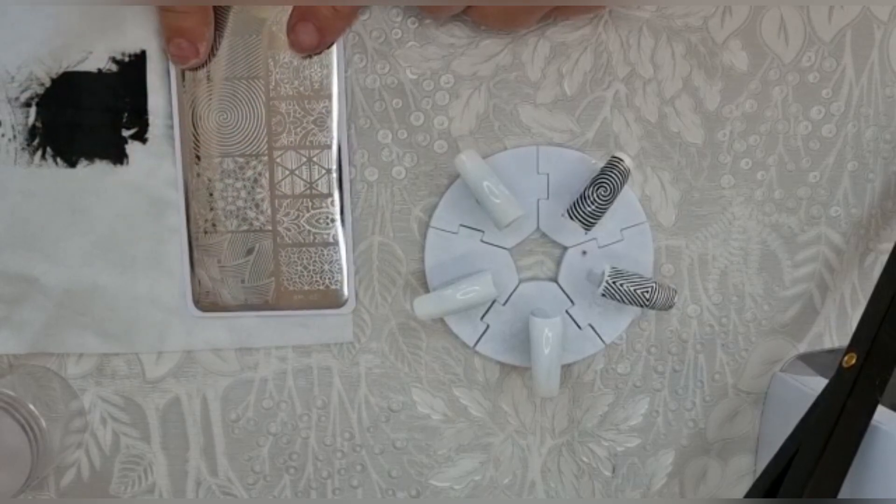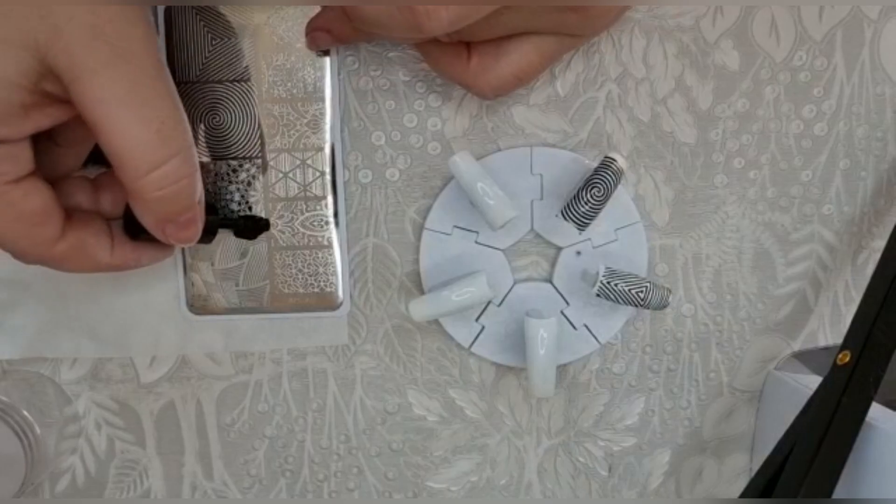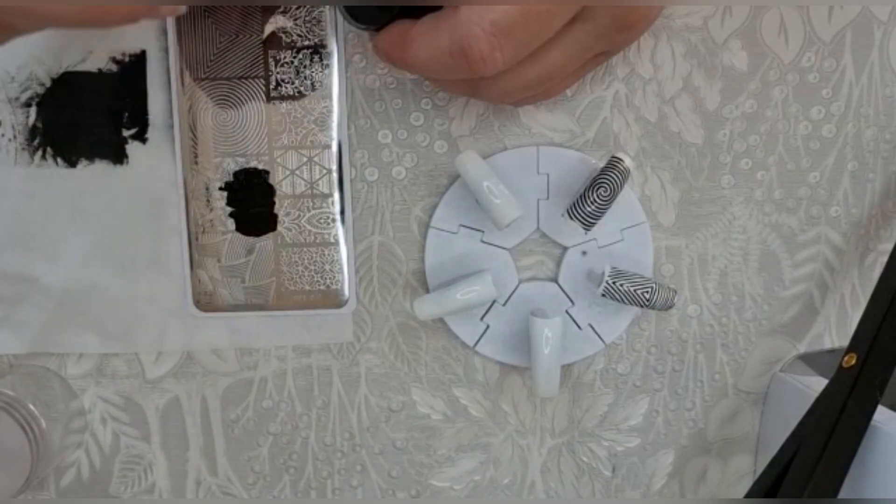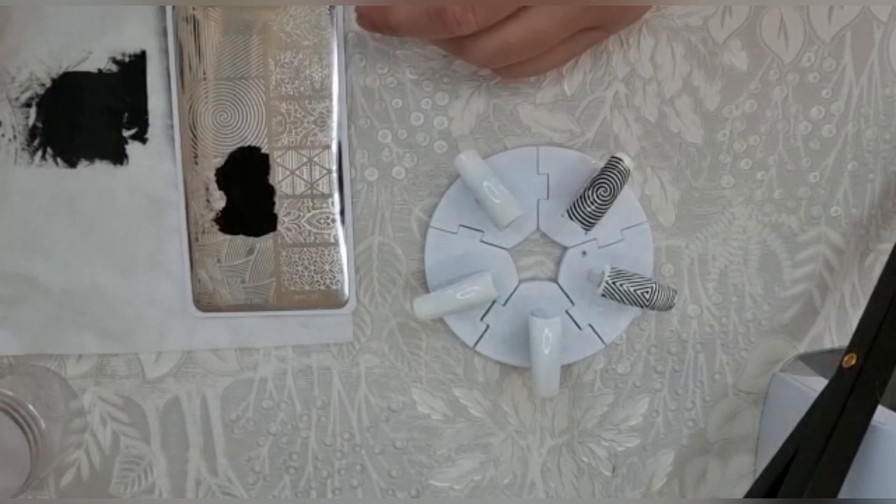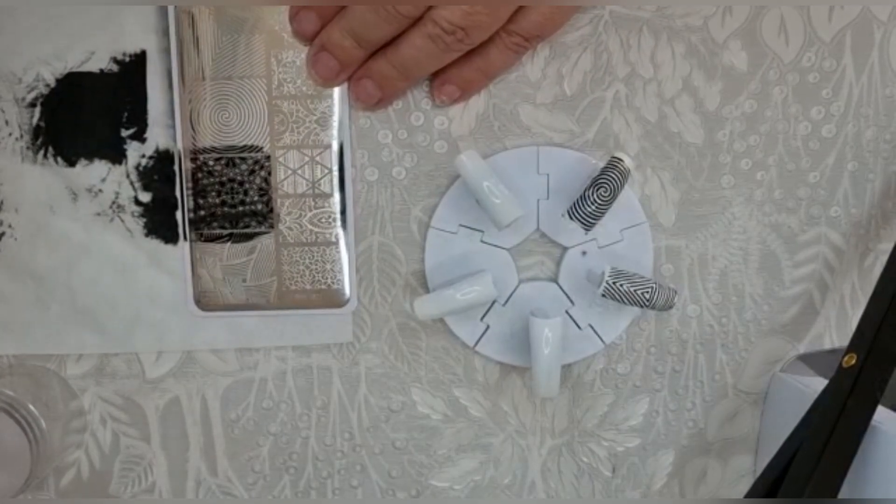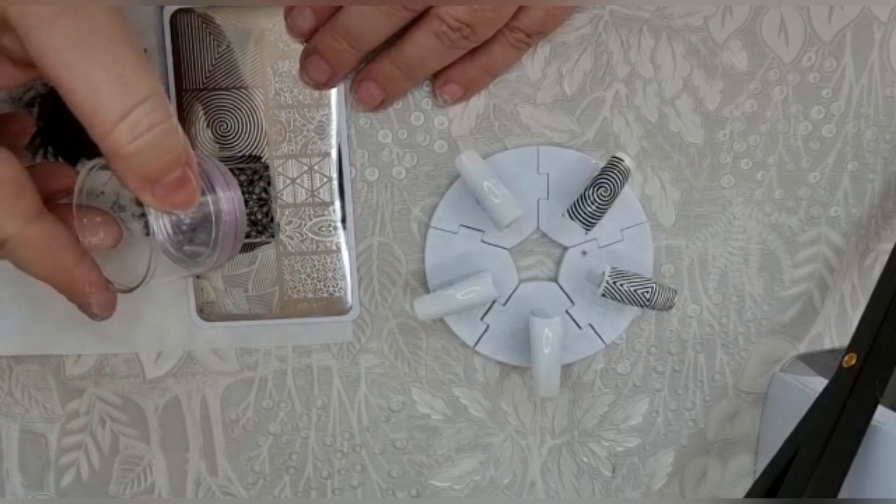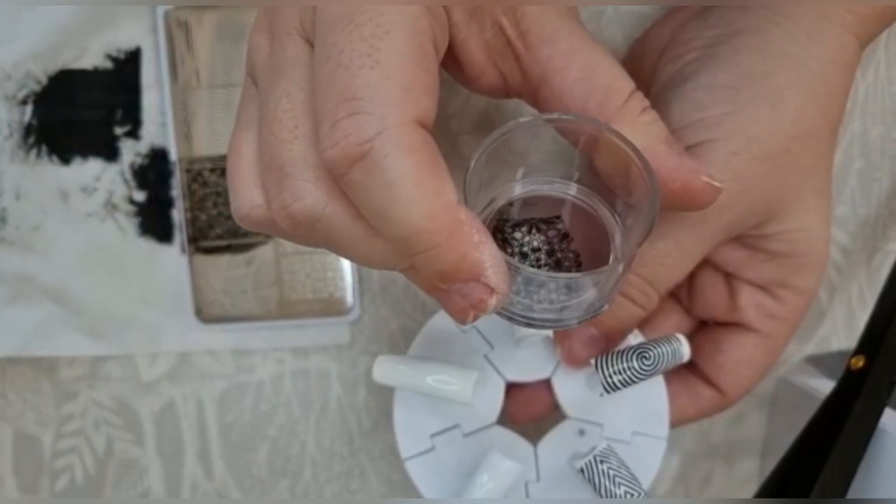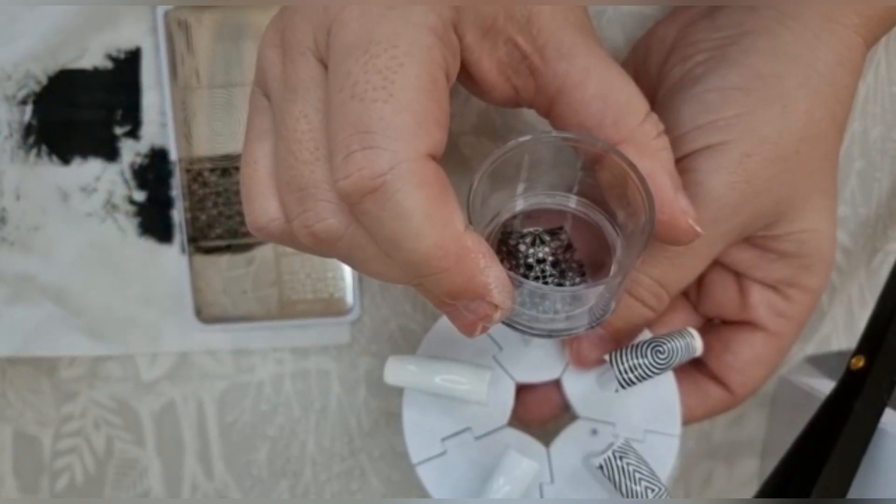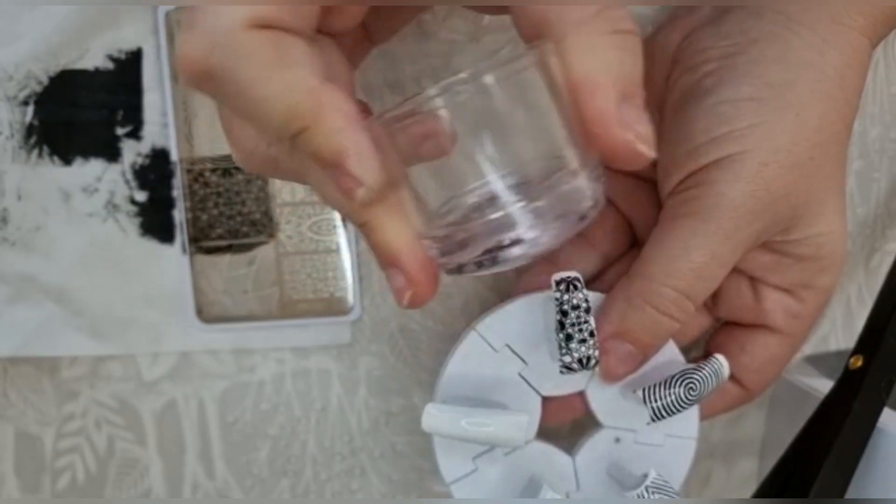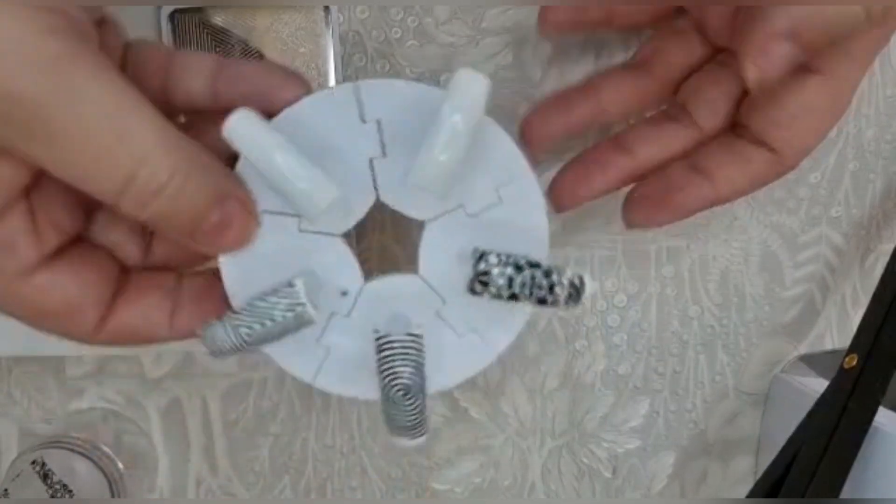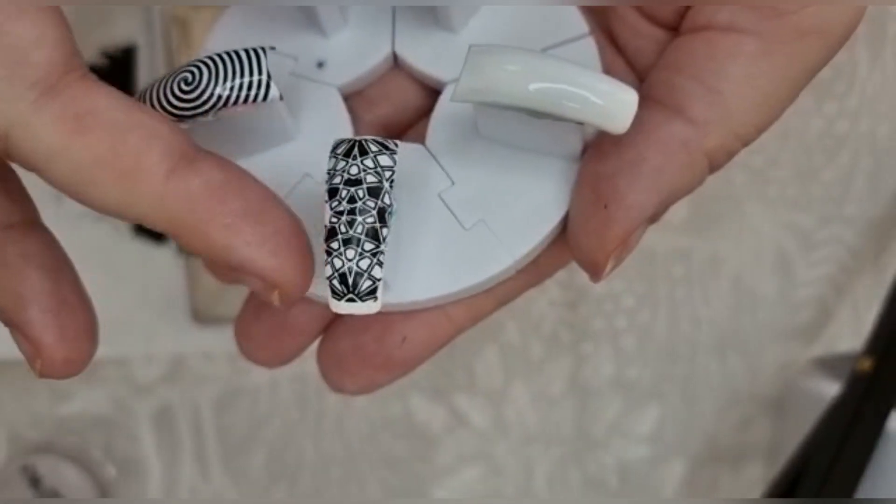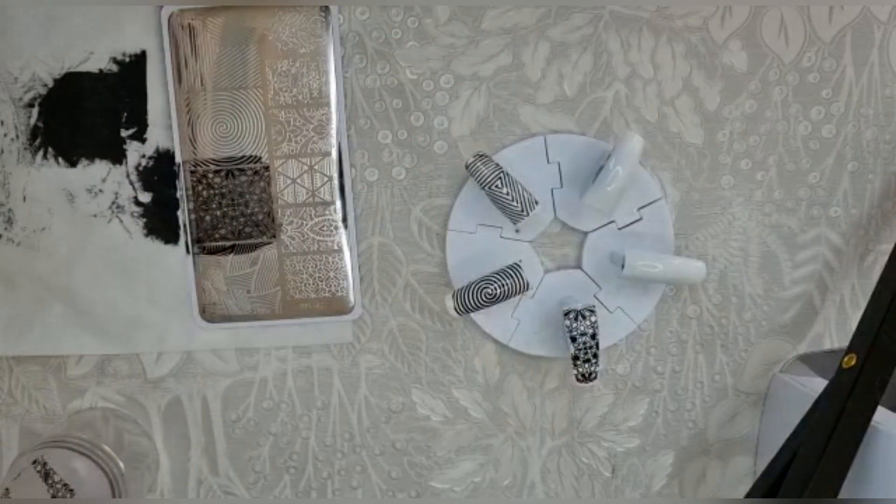So I'm going to do this one next. Same thing - I suppose they've done them this big so that you can choose whichever bit you want. No one's got a nail that wide, so that must be the reasoning. So again, just taking the pattern like that, try and get it in the center. It is really hard to get it in the center. Sorry for all the squeaks and groans in the background - it's the babies.